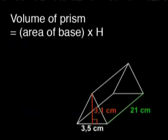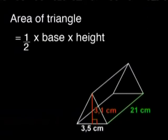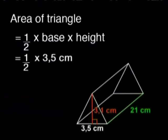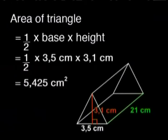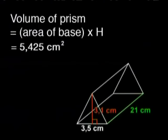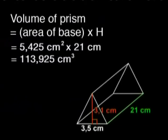The formula for volume is area of base times height. To get the area of the base, I need to calculate half base times height on this triangle. The base is 3.5 centimeters and the perpendicular height is 3.1 centimeters. So I get half of 10.85 centimeters squared, which is 5.425 centimeters squared. Now I can multiply by the height of the box. That's 21 centimeters. And on my calculator, that comes to 5.425 times 21, which is 113.925 centimeters cubed.